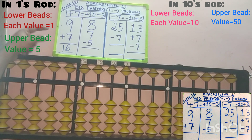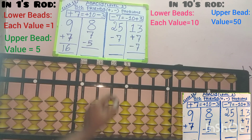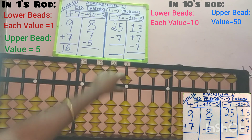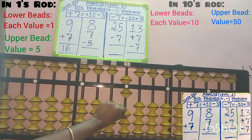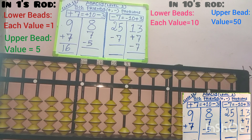Next, we will move to the second sum: 8 plus 7 minus 5. First, we will add 8 in the 1s place, since 8 is in the 1s place. 5, 6, 7, 8 — so 8 is added. First row completed.